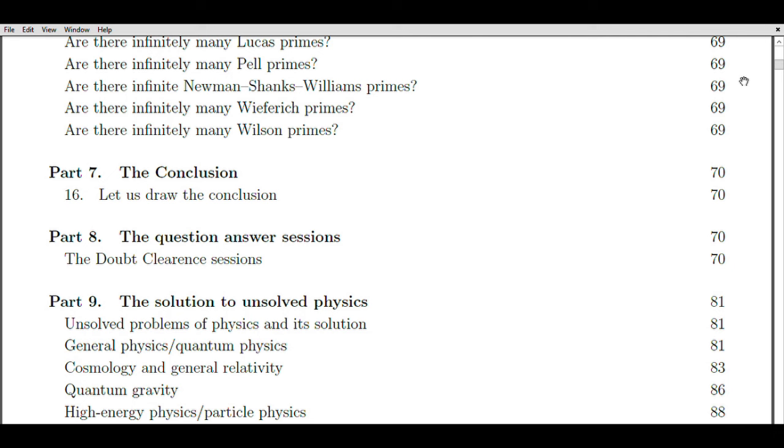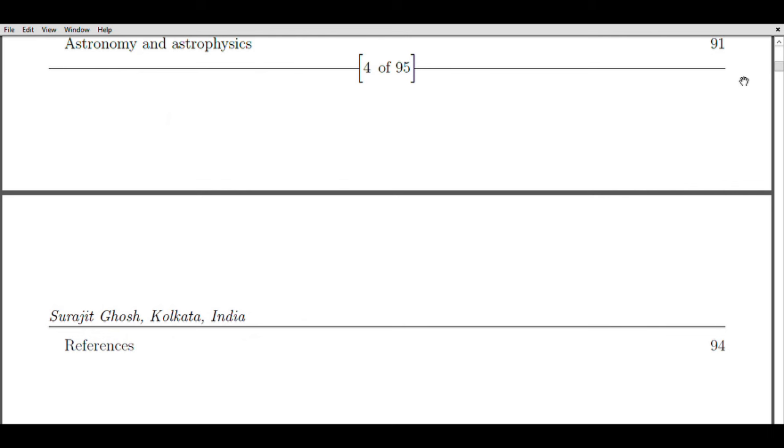It revolves around the distribution of prime numbers and their connection to the zeros of the Riemann Zeta function. The Riemann Zeta function is a complex-valued function defined for complex numbers s with a real part greater than 1. It is computed by summing the reciprocals of all positive integers raised to the power of minus s, starting from 1 and continuing infinitely.